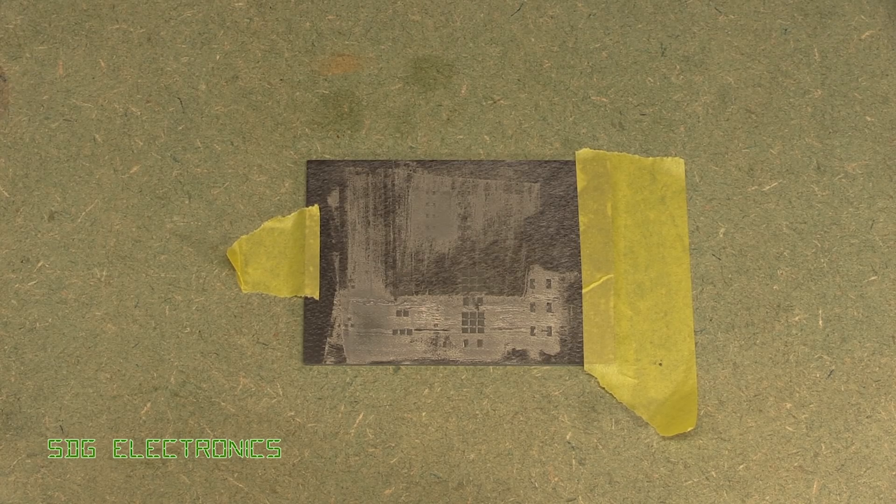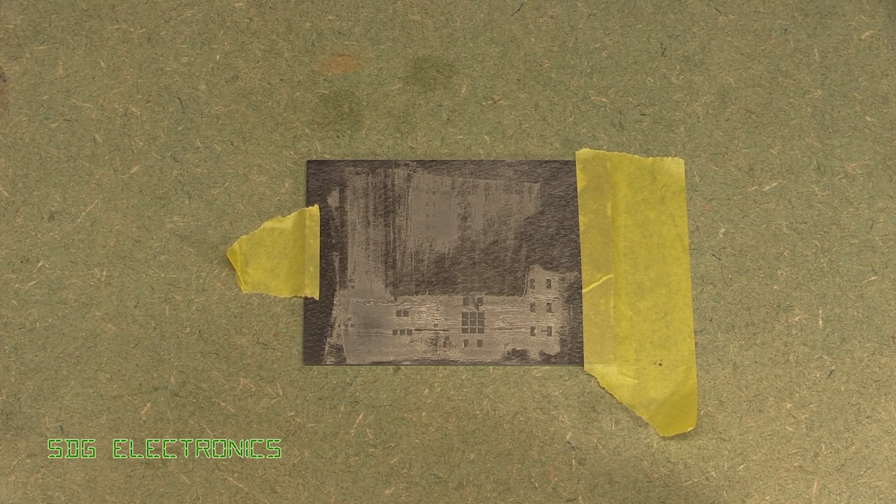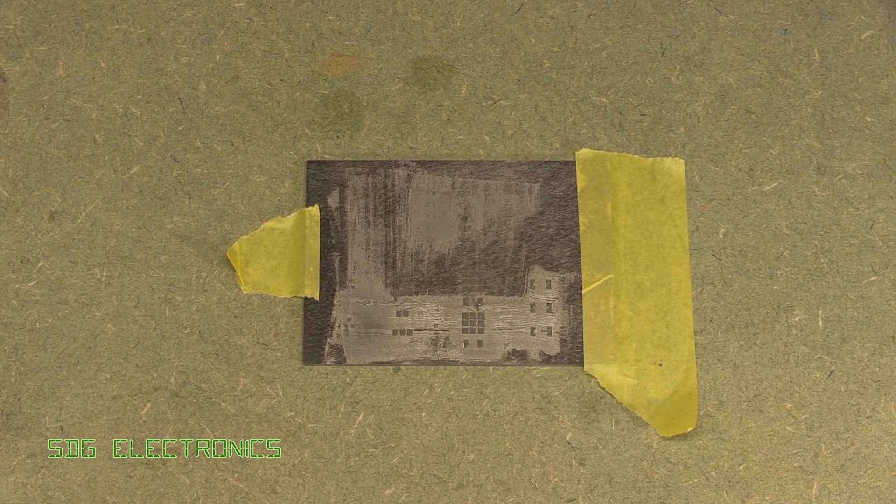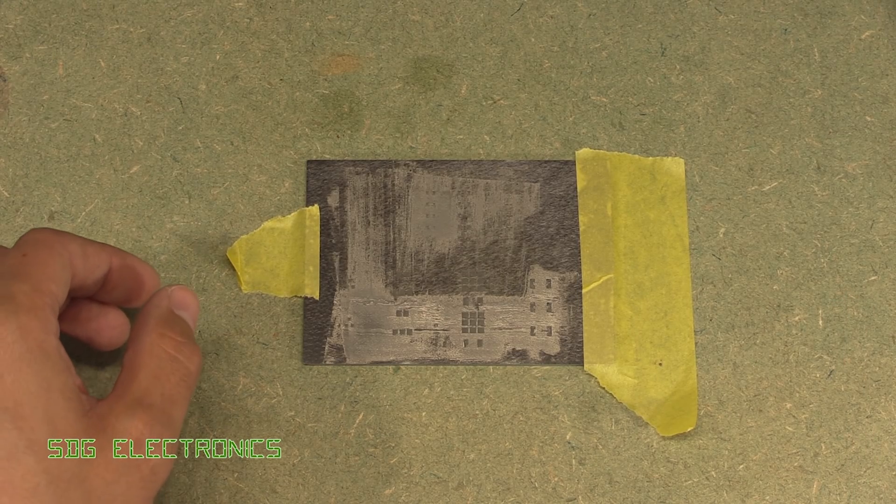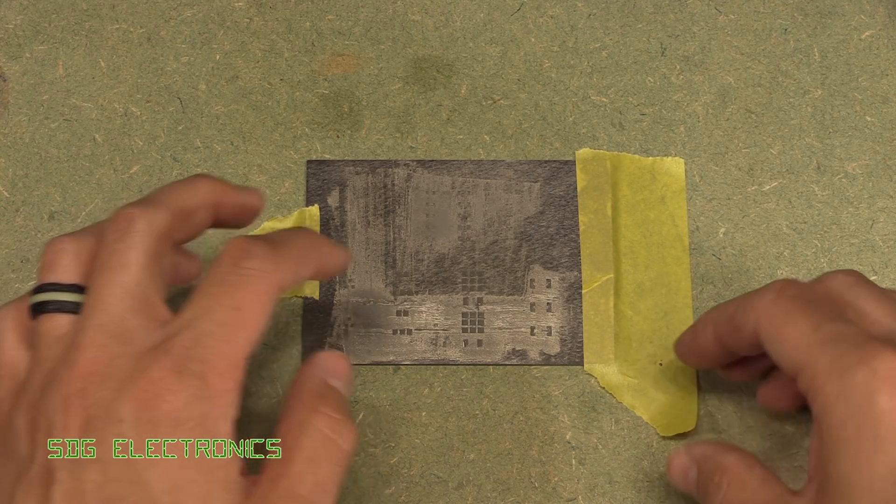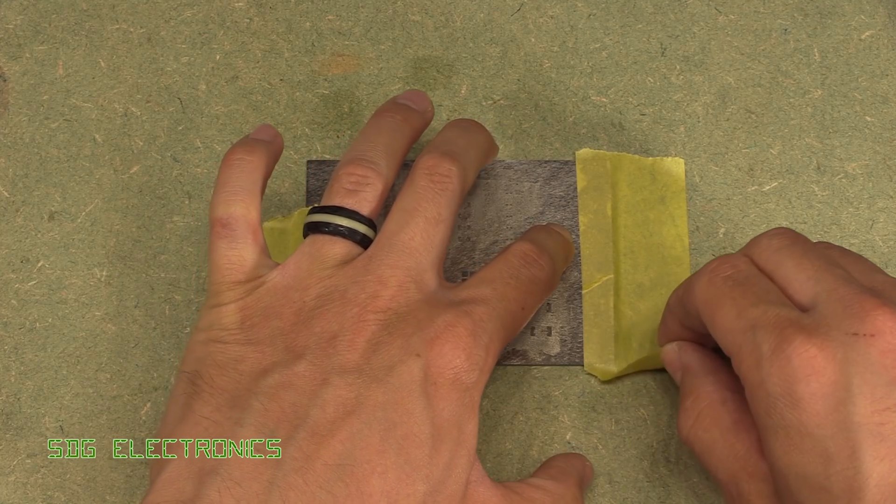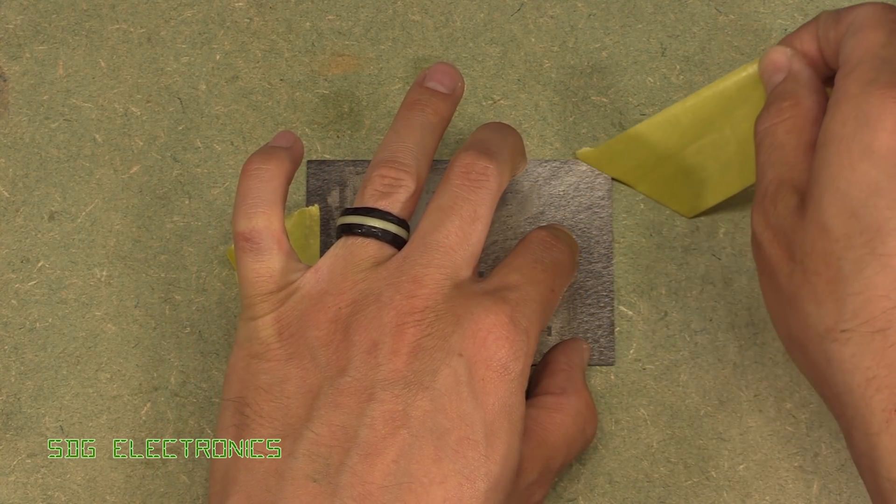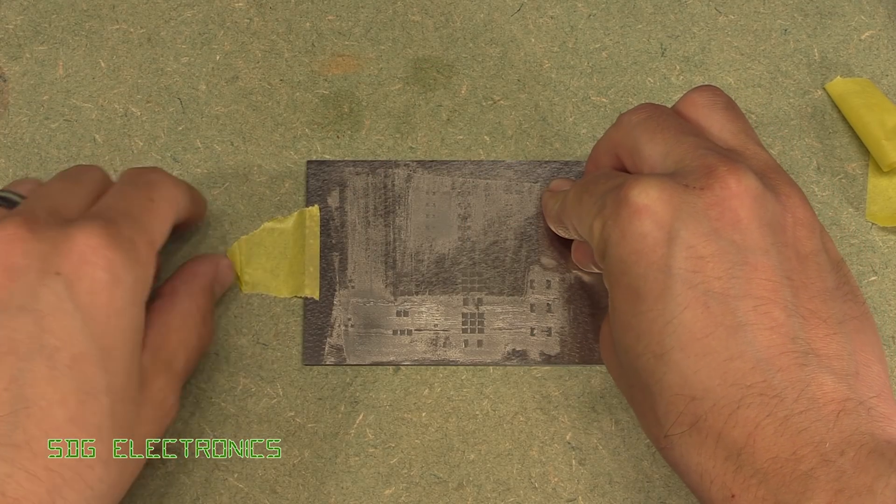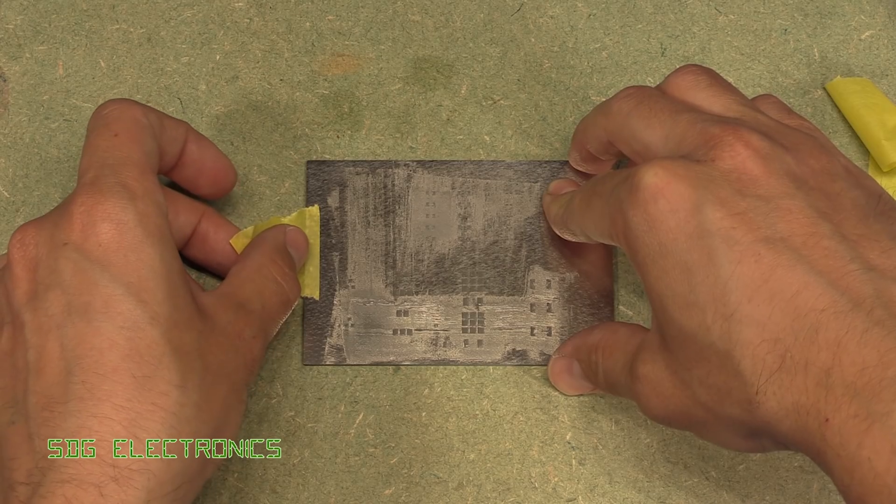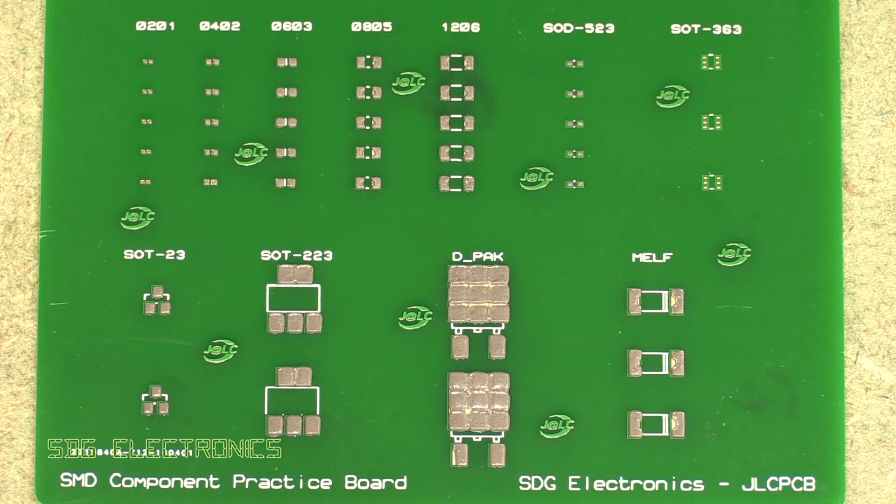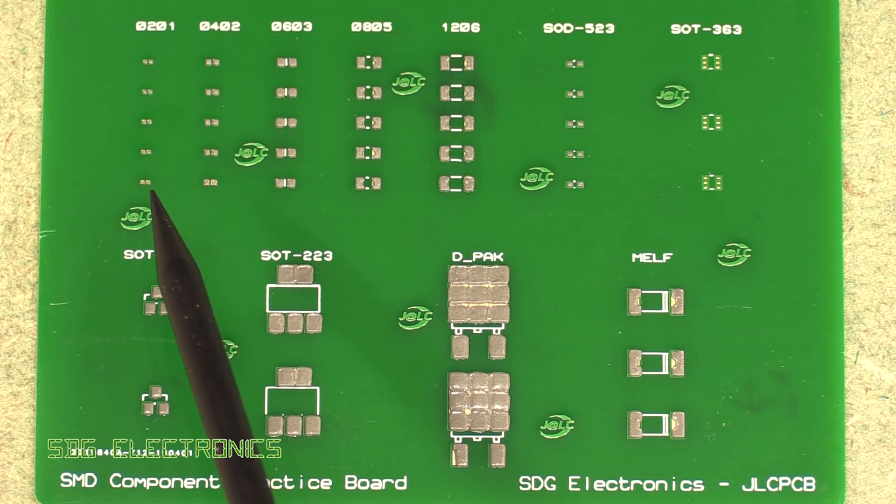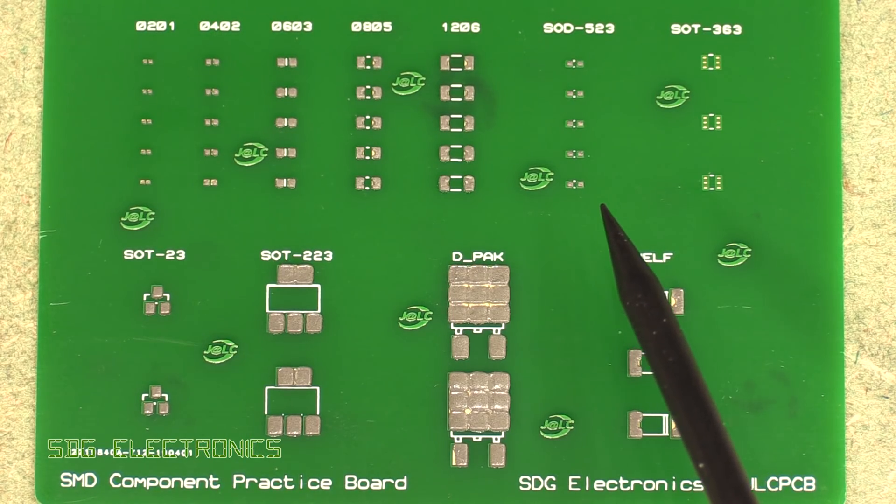Once you're at this stage, what you basically want to do is try and lift it all off in one go without smudging it. If you do end up smudging it, it's not the end of the world - you can just clean off the solder paste and start again. I'm going to pull off the tape first, hold it in place, and then we're going to lift it vertically in one go. There we go - that's pretty much perfect actually. We've got perfect coverage on the tiny 0201 pads and also on the SOD-523 pads. That's absolutely perfect.